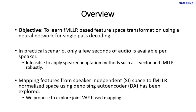Usually FMLLR requires 10 to 30 seconds of audio per speaker for parameter estimation. It also requires two-pass decoding. In real applications, available audio per speaker is much less, and it is difficult to do two-pass decoding.